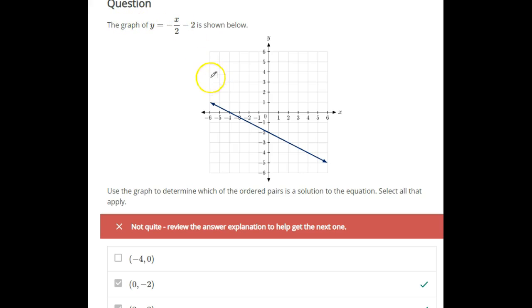For a question like this, we have the graph and we need to determine which of the ordered pairs listed is a solution to the equation and select all that apply. What you want to do is just look for these points and see if they're actually on that graph. So negative 4, 0 would be this point right here. And it is on the line. It's on that graph. So it is a solution to the equation. 0, negative 2, likewise on the graph. So it is a solution. And do that for all the choices, any that actually lie on the line, those points are solutions to the equation.